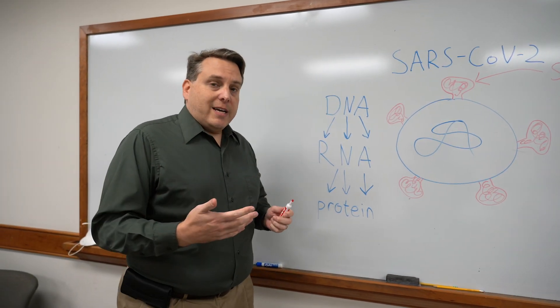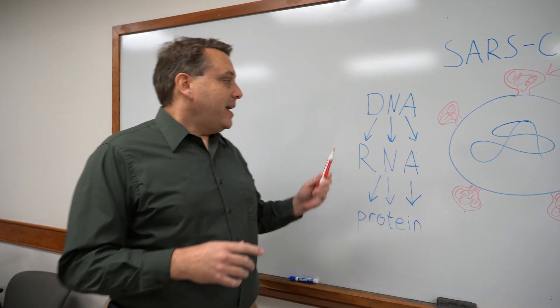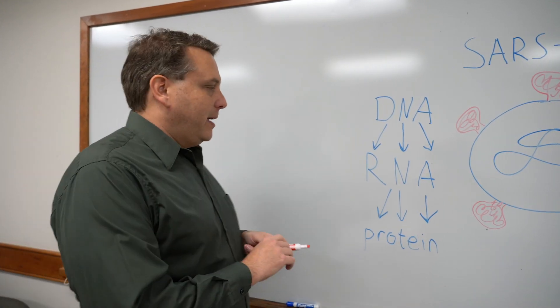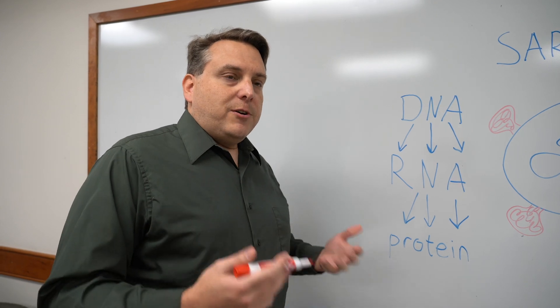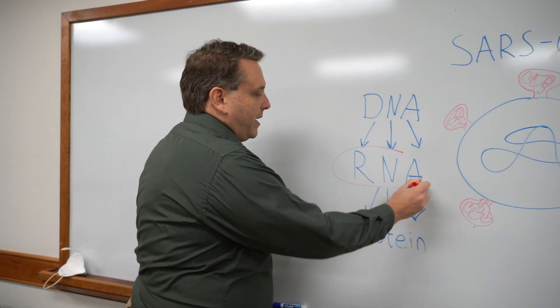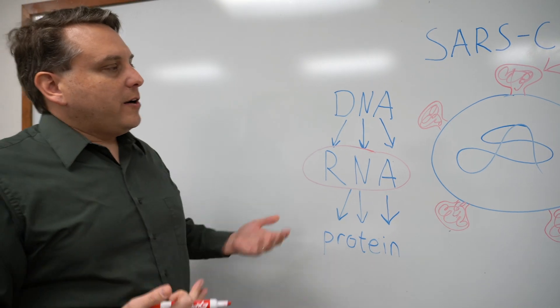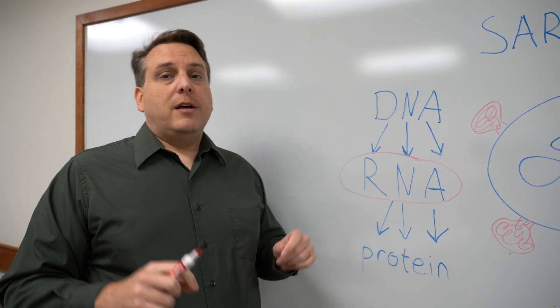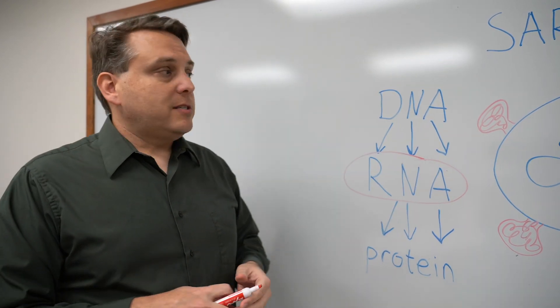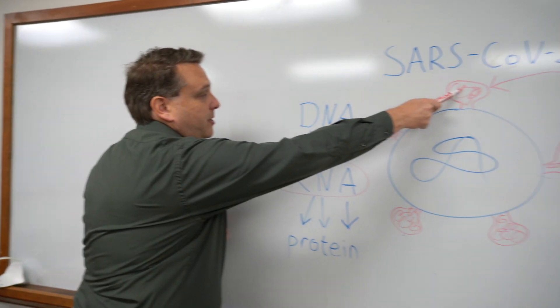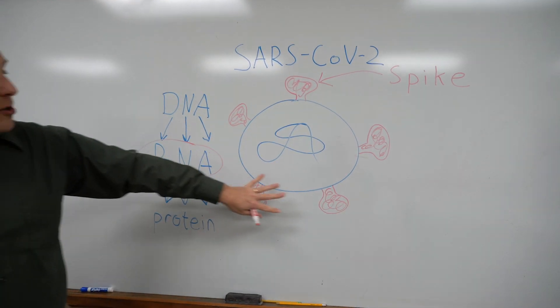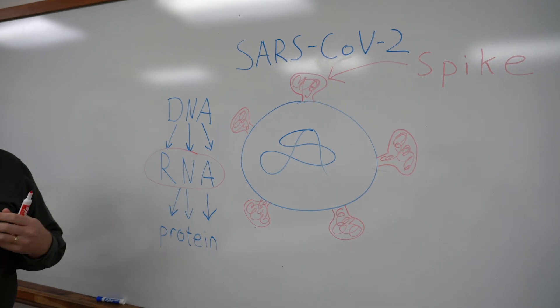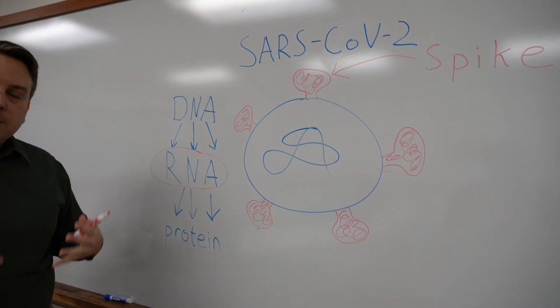What the Pfizer and Moderna vaccines do is they mimic part of this process in a very clever way. The Pfizer and Moderna vaccines are made with a molecule of RNA, and this molecule of RNA includes a work order for producing only a part of the SARS-CoV-2 virus. And that part is the spike protein here. The spike protein is found on the surface of the SARS-CoV-2 virus, and it's the part of the virus that your immune system most easily sees and recognizes.